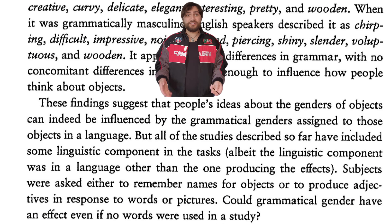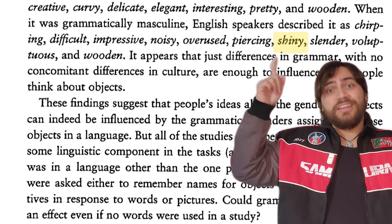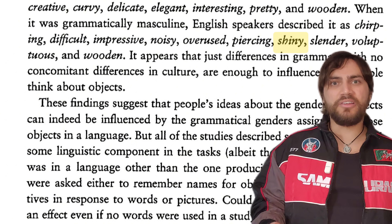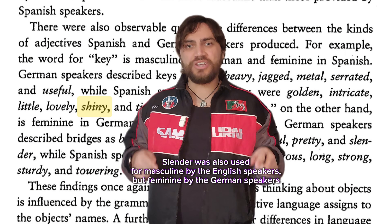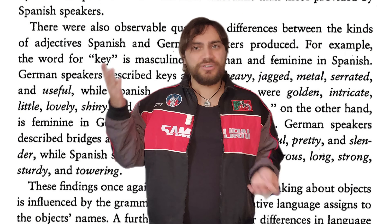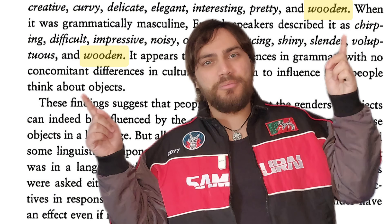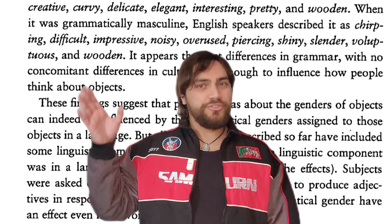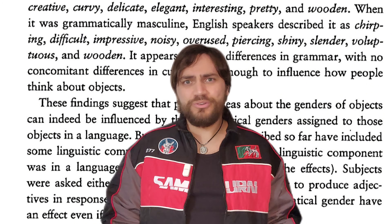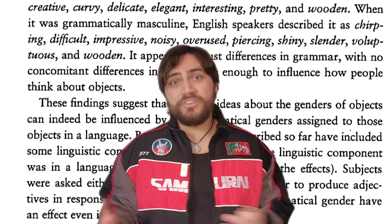So they're saying grammatical gender affects how participants perceive these objects. But I don't think that's quite solid evidence. They're saying 'shiny' shows English speakers using masculine descriptors for the masculine gender class — but earlier they showed that Spanish speakers used 'shiny' for the key, which is feminine in Spanish. So how can 'shiny' be evidence for both lining up with gender stereotypes at the same time? Similarly, English speakers used 'wooden' for both masculine and feminine. And you have words like 'voluptuous' and 'slender' used for the masculine class — at best it seems inconsistent, at worst completely counter to what they're arguing.